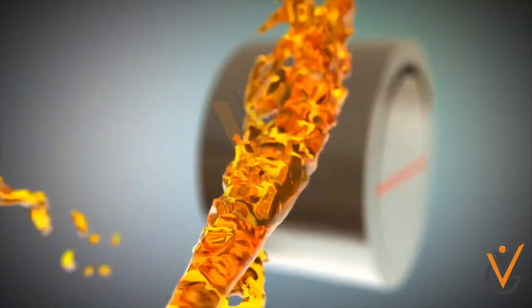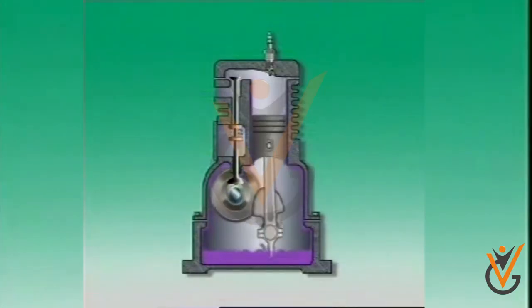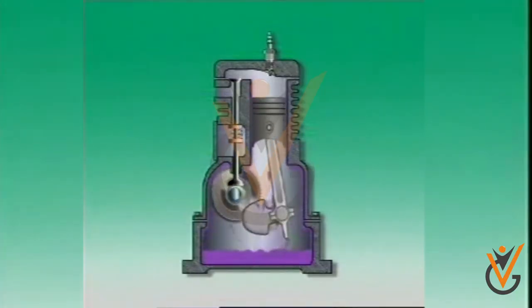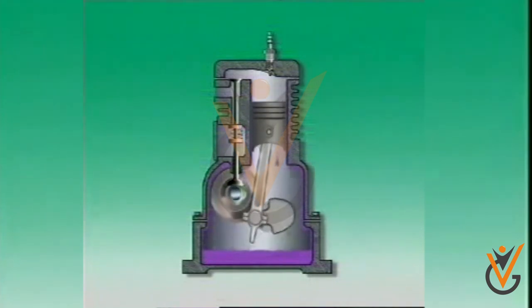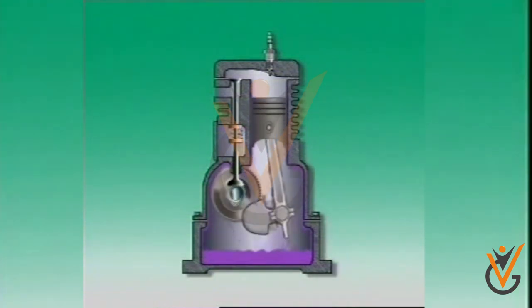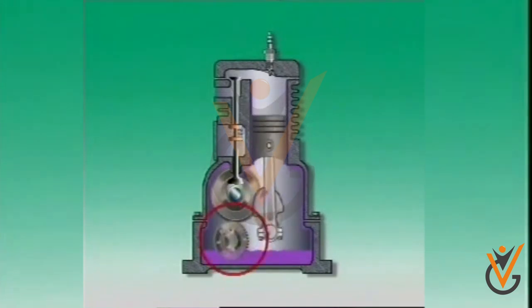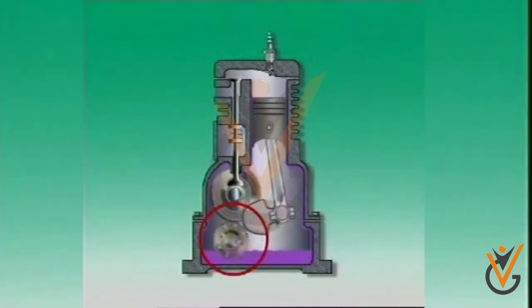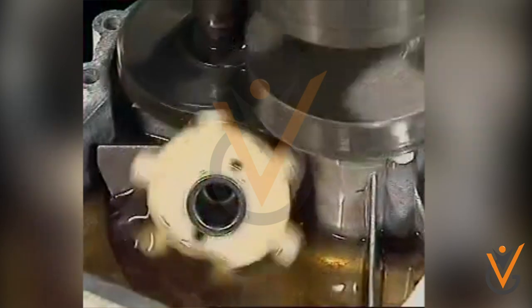Methods of lubrication. Splash lubrication: the moving components are inside a protective housing. During operation, components dip into the oil bath and carry oil to the other components.